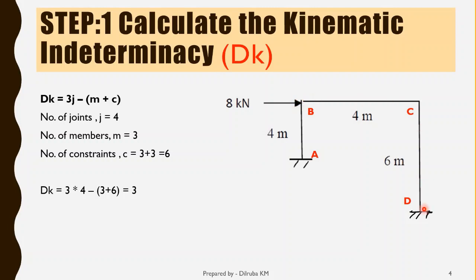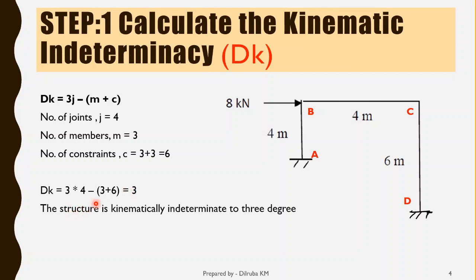Since this structure is a sway frame, it will sway in any direction. From the figure we can see that the load is applied downward and toward the right side, so the frame will sway towards the right. We don't have to reduce any degrees of freedom, so the degrees of freedom will remain 3. The structure is kinematically indeterminate to 3 degrees.